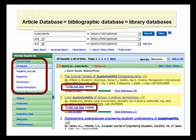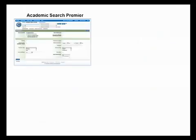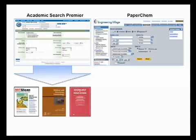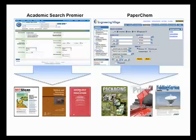Some databases cover a broad range of subjects. For example, the general database Academic Search Premier will include articles on a variety of topics in different subject areas. On the other hand, a specialized database like PaperChem will only cover articles that report on specific topics, such as paper science.